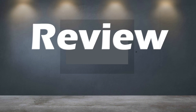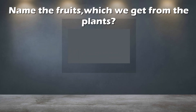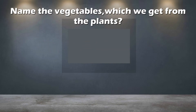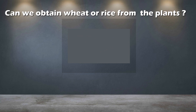Let's Review. Name the tree from which we get medicines. Name the fruits which we get from plants — Apple and Grape. Name the vegetables which we get from plants — Tomato. Is an electric fan made from plants? No. Can we obtain wheat or rice from plants? Yes.